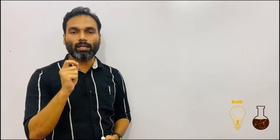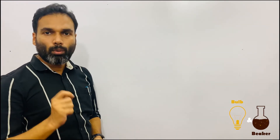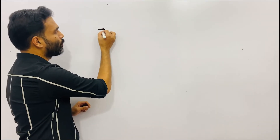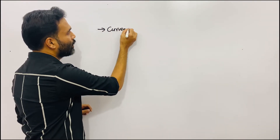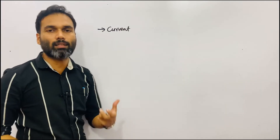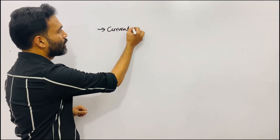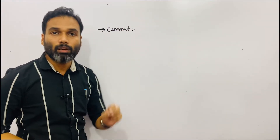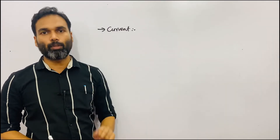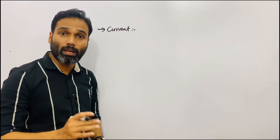Let's begin with current. What exactly is meant by current? Current means nothing but flow of electrons. Simply, you can say electrons flow is what we call current. When we discuss the first topic — current — it's basic terms. First point is current: current is nothing but flow of electrons. Flow of electrons is known as current.